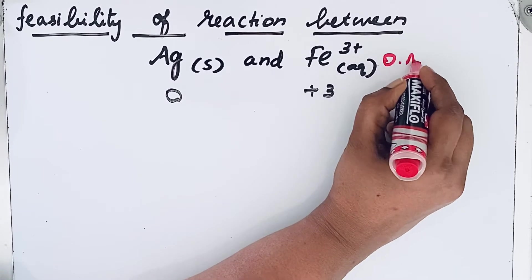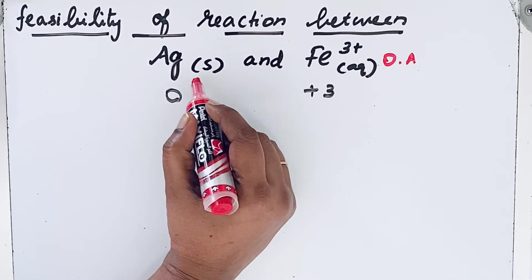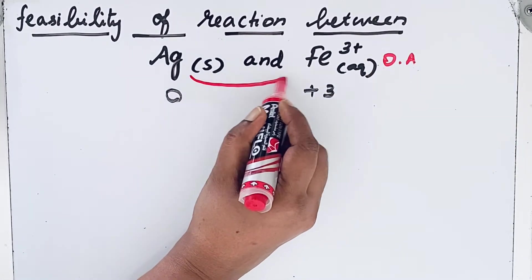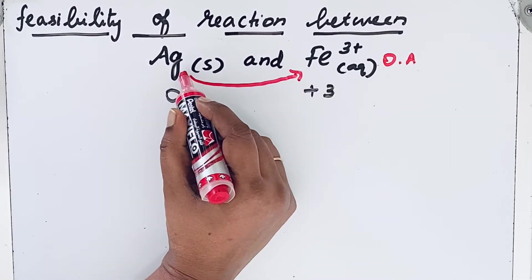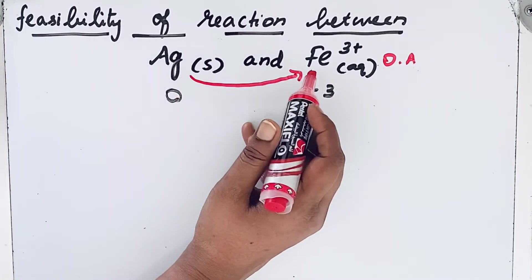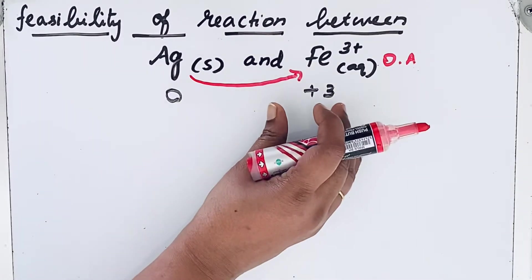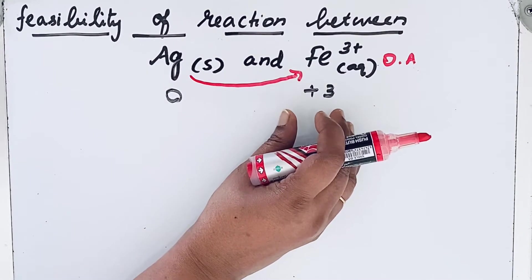So this one is the oxidizing agent which can pull the electrons from Ag. So electron movement takes place from Ag to Fe³⁺. This identification of oxidizing agent is over.